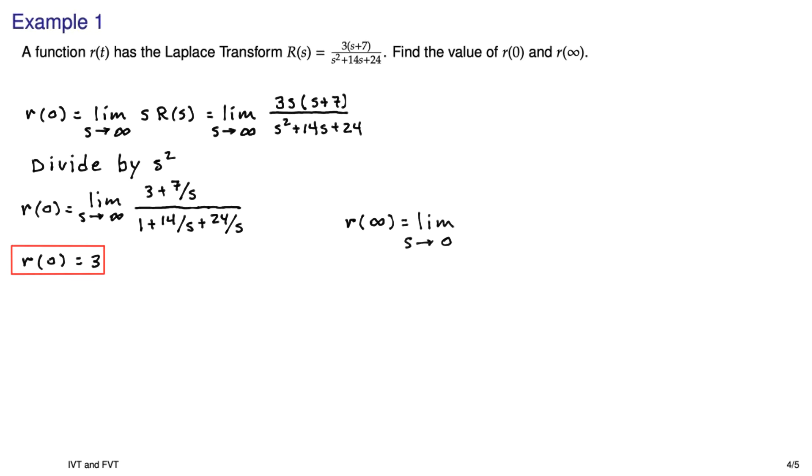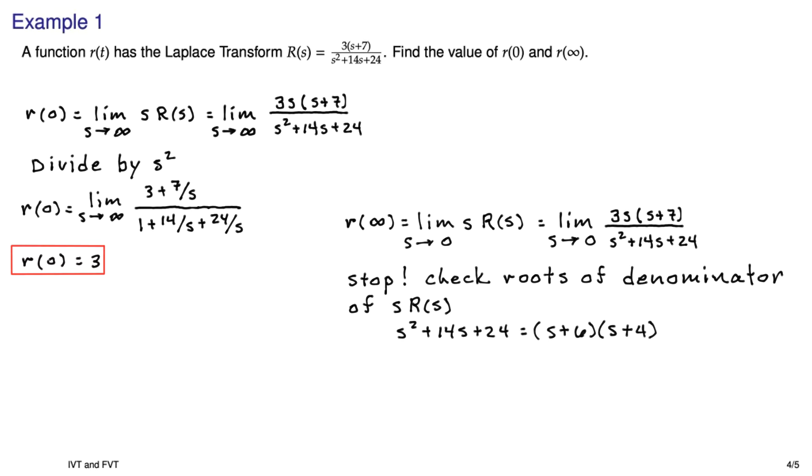Well now let's do the final value theorem. s times R(s) is the same as we had in the previous initial value theorem. But at this point, you need to stop and check the roots of the denominator of this s times R(s). So here's the denominator. You can factor it into a very nice form. And you can see that both roots have negative real parts. So the final value theorem applies. You let s go to zero, and you just get zero for the final value.